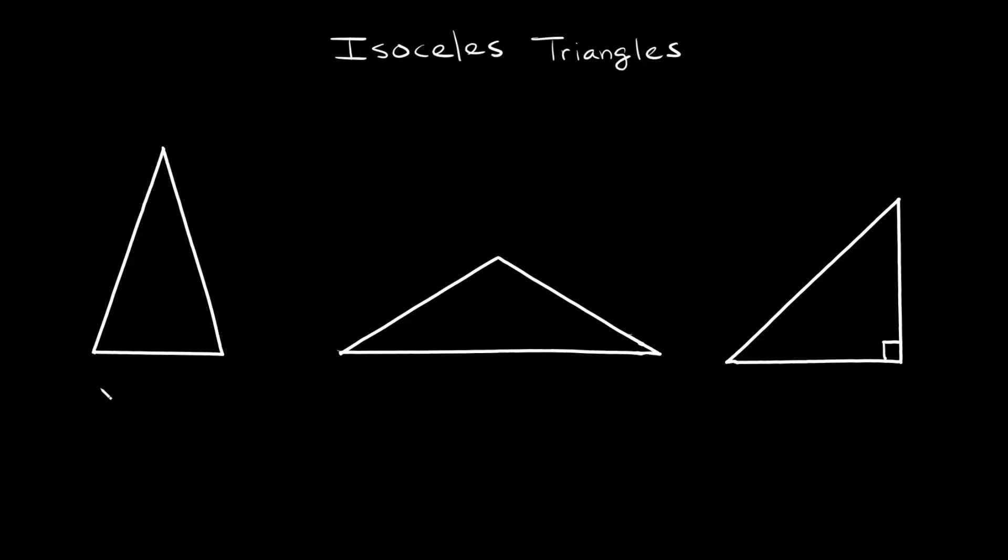An isosceles triangle is a special type of triangle that always has two sides that are the exact same length. For example, with this first one on the left, you can see that this side and this side are the exact same length, and then this base is a different length.